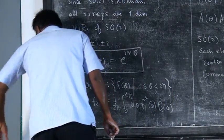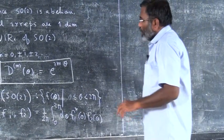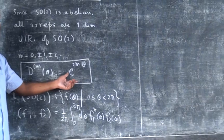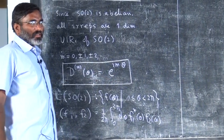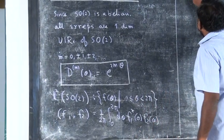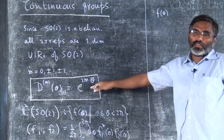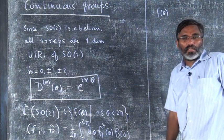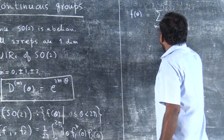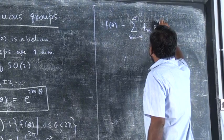Now you will see that since these are one-dimensional representations, these elements are complex numbers, so they will also be the characters. And if you want to write down any function of θ in this vector space, it can be expressed in terms of these irreducible representations. So that will be equal to the sum from m equal to minus infinity to plus infinity of f_m times e^{imα}.